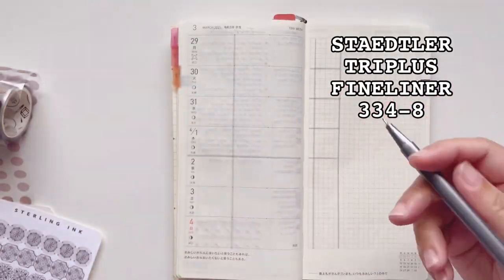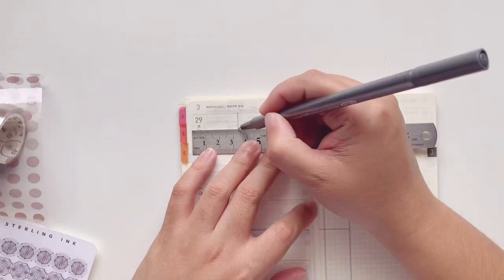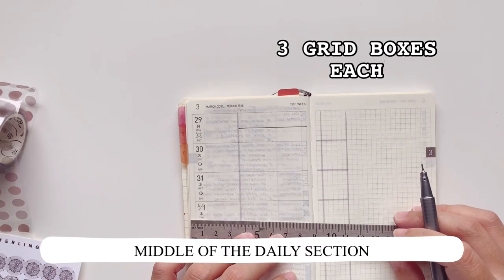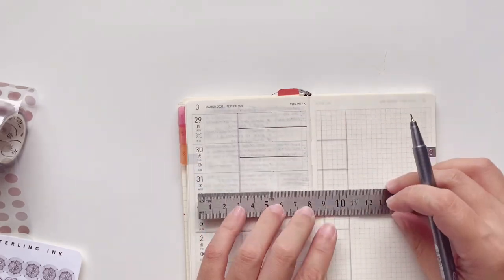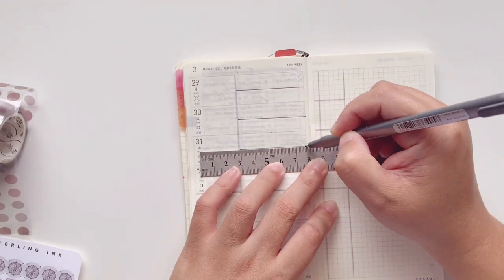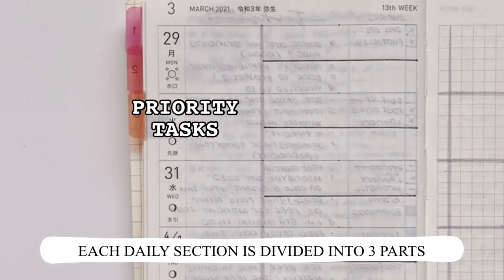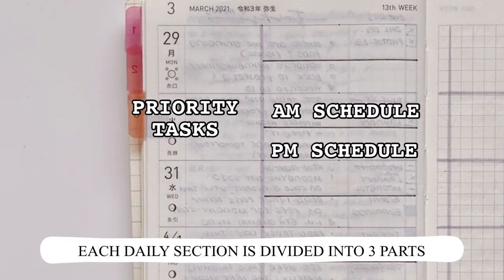But first I'm going to switch into a fineliner. I have been loving the Stadler fineliners lately. And for this one I've divided the daily section into morning and afternoon schedules. So we have priority tasks as well as schedules on the left side of the page.